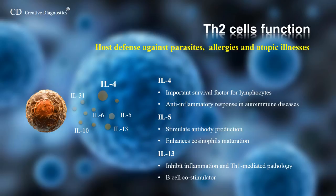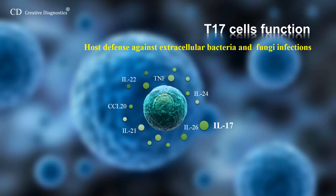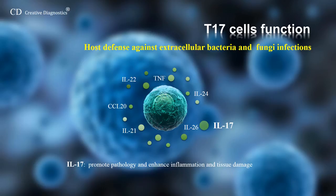Interleukin-5 also enhances proliferation and differentiation of eosinophil precursors into mature eosinophils. Interleukin-13 is known to inhibit the production of pro-inflammatory cytokines, including interleukin-1-beta, interleukin-12, and tumor necrosis factor by monocytes, promote protection from TH1-mediated pathology, and it also serves as a B-cell co-stimulator that facilitates B-cell activation and maturation. TH17 cells are involved in host defense against extracellular bacteria and fungi infections. Much of the pathogenic functions of TH17 cells have been attributed to the secretion of interleukin-17, which promotes pathology and enhances inflammation and tissue damage.